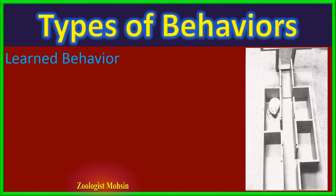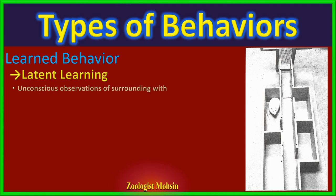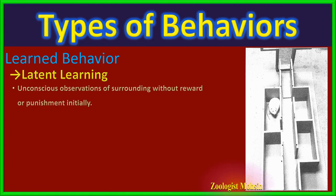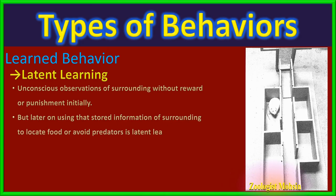The next type of learning is latent learning. The word latent means later useful. An animal wanders in its surroundings without any purpose and learns about the environment and locations. Afterwards, when it receives a reward or food elsewhere, it remembers the area easily due to previous experience and reaches there more quickly than a new animal that has no previous experience.